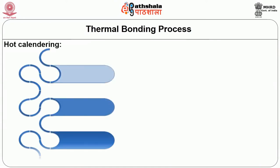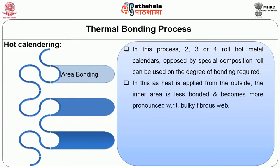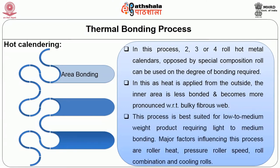The next technique is hot calendaring. There are three types. Area bonding: in this process, two, three, or four roller hot metal calendars can be used depending on the degree of bonding required and the weight of the batt. As heat is applied from the outside, the inner area is less bonded, which becomes more pronounced with bulky fibrous webs. This process is best suited for low to medium weight products requiring light to medium bonding. Major factors influencing this process are roller heat, roller pressure, roller speed, roller combinations, and the cooling temperature of the rolls.